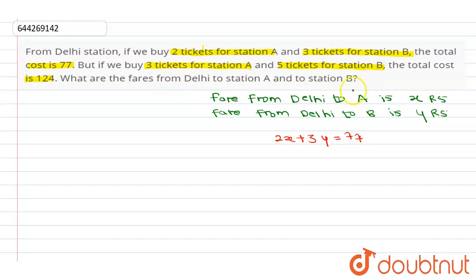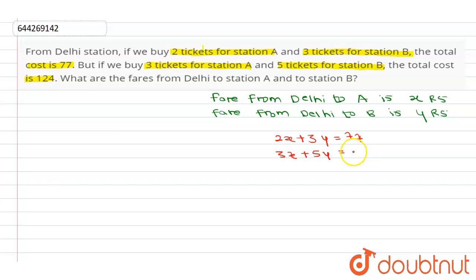Similarly, according to the second condition, 3 tickets for station A and 5 tickets for station B will cost 124 rupees. Therefore: 3x + 5y = 124. These are our linear equations.